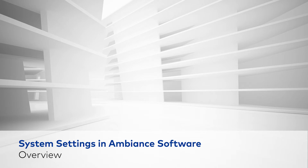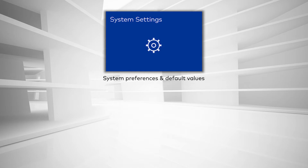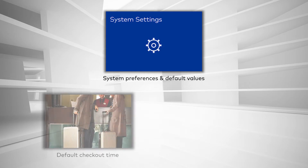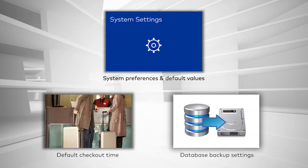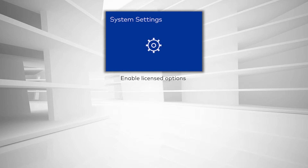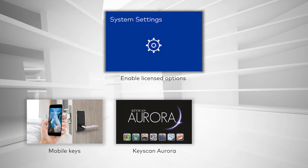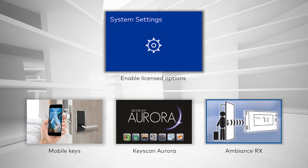Overview. System Settings is the Ambience module where you can define system preferences and default values for global options. Examples of this include defining the default checkout time for guests and configuring database backup settings. System Settings is also where you enable licensed options for mobile keys, the Keyscan Aurora interface, and the Ambience RX Remote Lock Management features.